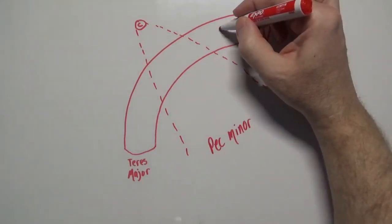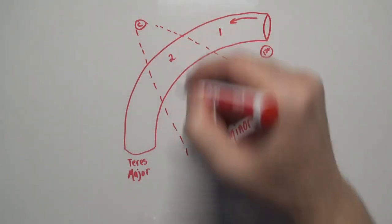We'll number those sections 1, 2, and 3.